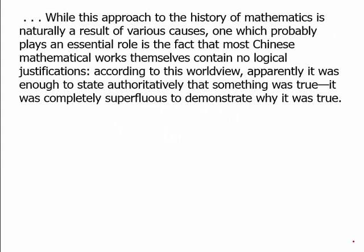While this approach to the history of mathematics is naturally a result of various causes, one which most probably plays an essential role is the fact that most Chinese mathematical works themselves contain no justification. According to this worldview, apparently it was enough to state authoritatively that something was true — it was completely superfluous to demonstrate why it was true. So the way Chinese histories of mathematics are written is quite different: no proofs in the historical works, probably because no proofs were given in the mathematical works themselves.